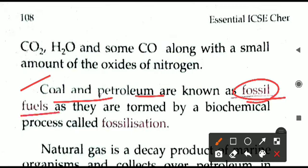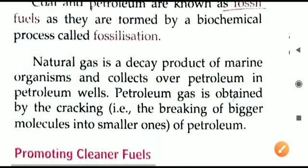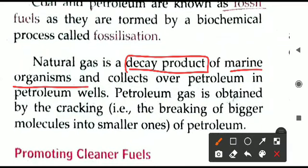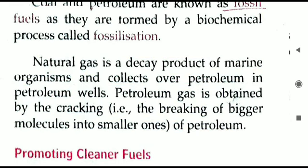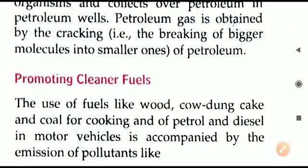Coal and petroleum are also called fossil fuels because they are formed by the process of fossilization — produced from the dead remains of plants and animals buried for millions of years below the earth's crust under high pressure. Petroleum reserves are obtained the same way. Natural gas is a decay product of marine organisms that died in the sea; they decomposed below the sea bed, and the gas collected over petroleum reserves. Petroleum gas is obtained through the cracking process, where larger molecules are broken into smaller ones.